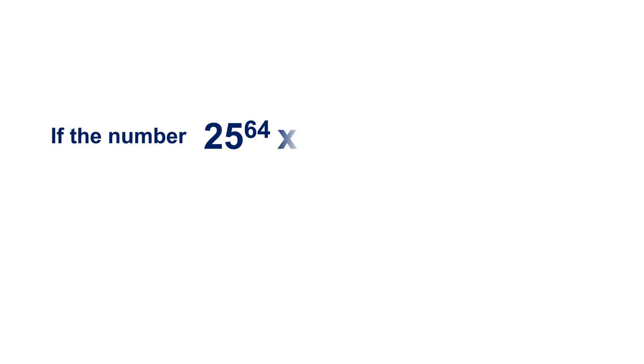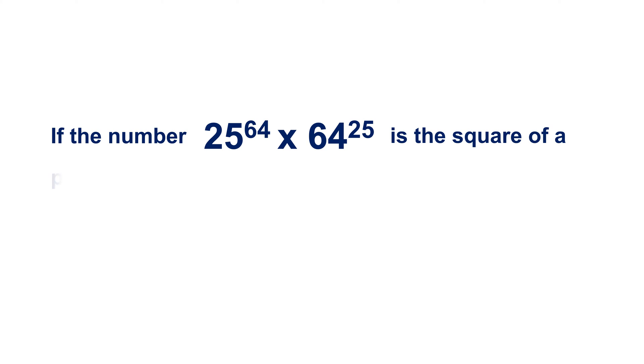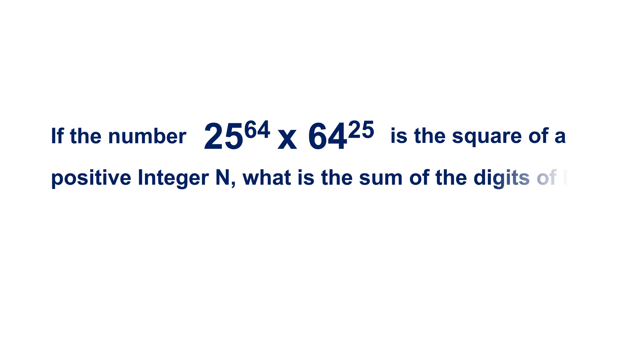Hi! If you love numbers, here is a very interesting question for you to solve. The question goes like this: if the number 25 to the power 64 times 64 to the power 25 is the square of a positive integer n, what is the sum of the digits of n? Do pause the video to think of the solution.